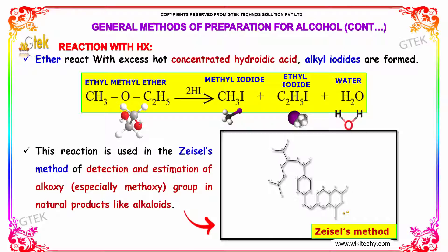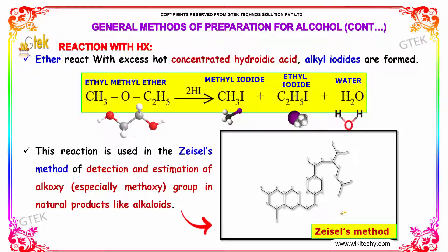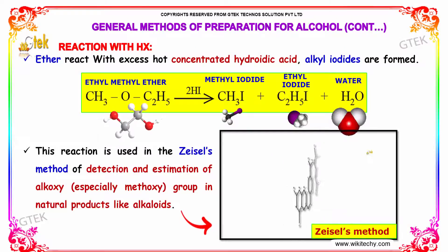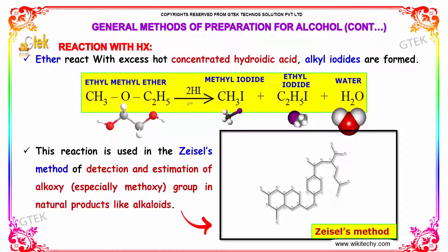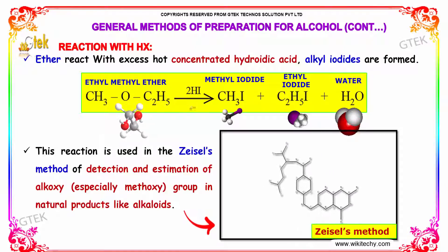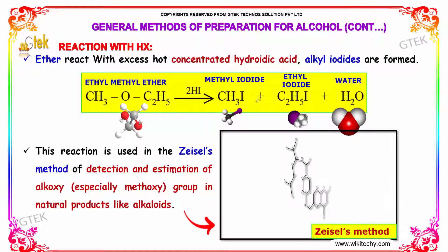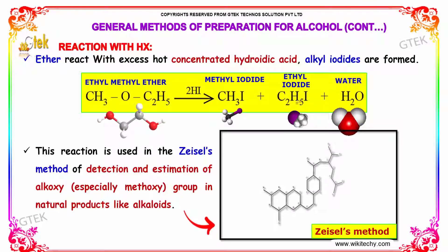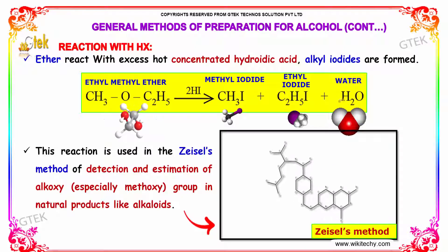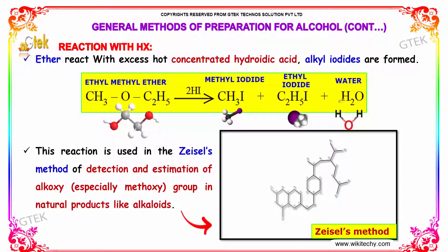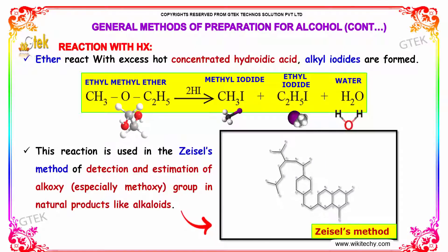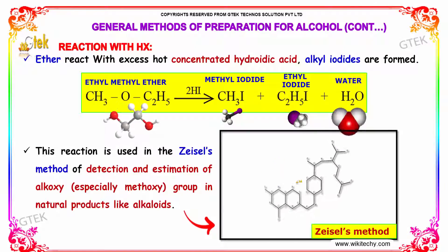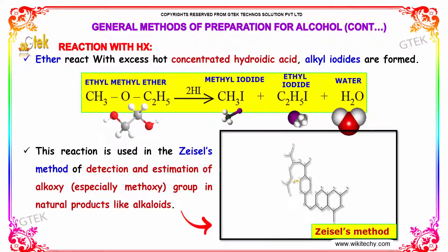Ether reacts with excess hot concentrated hydroiodic acid, and alkyl iodides are formed. Here, ethyl methyl ether on reacting with 2 moles of HI forms methyl iodide and ethyl iodide plus water. This reaction is used in Zeisel's method of detection and estimation of alkoxy groups in natural products like alkaloids. This is a graphical representation of Zeisel's method.